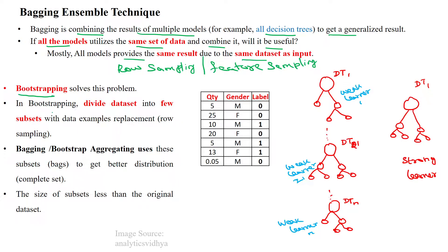This means we are going to use the bootstrapping approach. In this approach, we will divide the dataset into a few subsets — that is the row sampling approach.